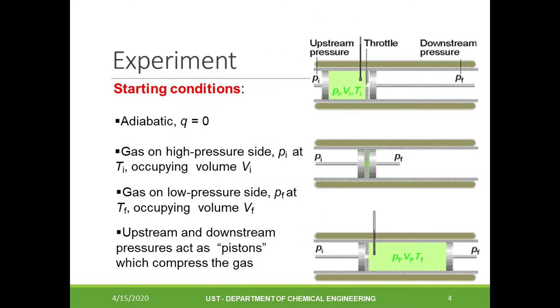The tube itself is insulated so that no heat can enter or leave the tube. Imagine that some gas is placed between the porous plate and the piston on the left side of the tube—this is side one. On the other side, the piston is flush against the porous plate—this is side two.